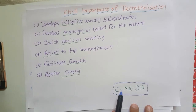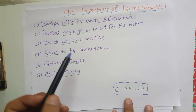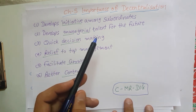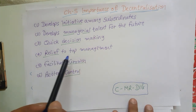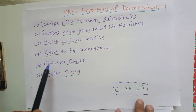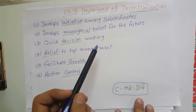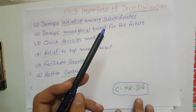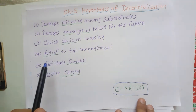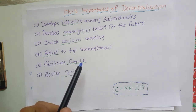C means better control. M means develop managerial talent for the future. R means relief to top management. D means quick decision making. I means develop initiative among subordinates. And G means facilitate growth. Thank you, friends.